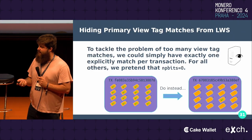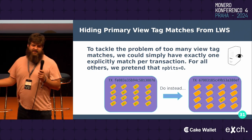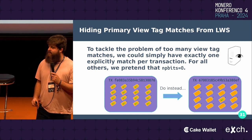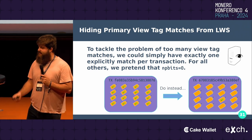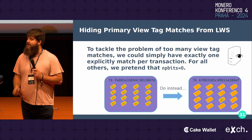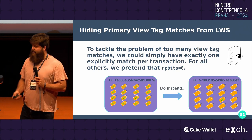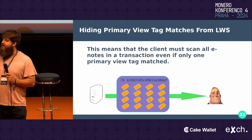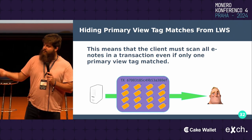Tackling the view tag privacy issues: going back to the issue where you've got too many that match, the simple solution is just don't have them match. What this means for the light wallet side is that they're going to have to send all of the e-notes in a transaction if one of them matches — so that does increase bandwidth. Whether we want to go with this is kind of up in the air, but this would make pocket change and churning still very private. Even if you don't match all the e-notes in a transaction, you still have to send all of them on the light wallet side.